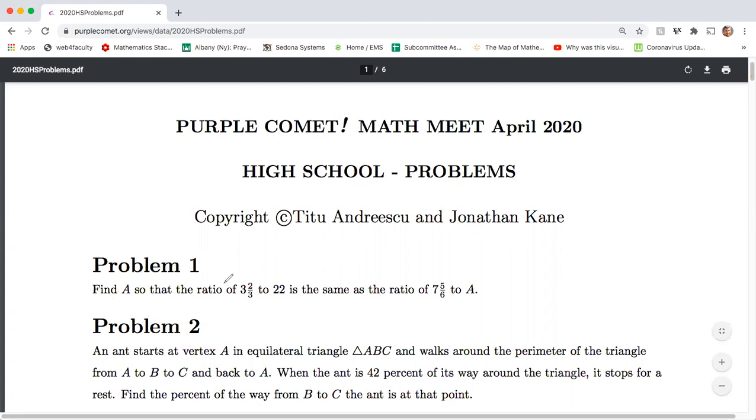So problem one, find A so that the ratio of three and two-thirds to 22 is the same as the ratio of seven and five-sixths to A. So A is an unknown. We want to find A so that the ratio of three and two-thirds to 22 is the same as the ratio of seven and five-sixths to A. Okay, so looks like very simple arithmetic problem. What do we do? Well, I would prefer to maybe first write this mixed number as a fraction. So three times three, nine plus two, eleven, eleven-thirds.